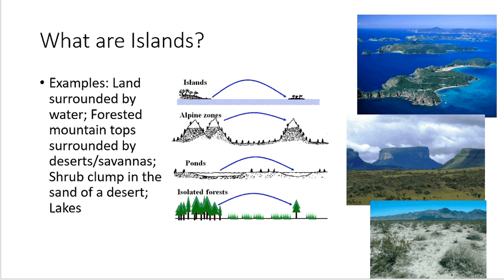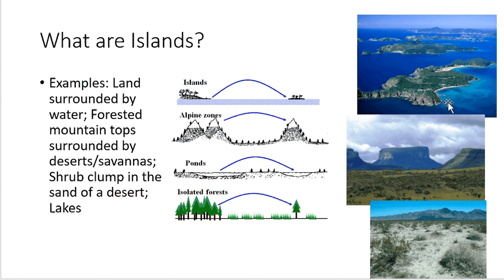Here are some visuals to illustrate what islands are. This is the classic example of islands — a piece of land surrounded by water. Here's a picture of New Zealand, in a place appropriately called the Bay of Islands, with a whole set of different islands surrounded by water.